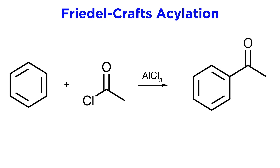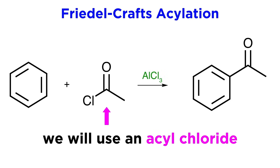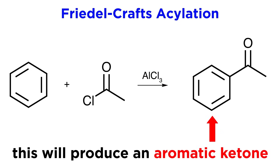A third approach for producing ketones is Friedel-Crafts acylation. When benzene reacts with an acyl chloride in the presence of aluminum trichloride, we end up with an aromatic ketone.